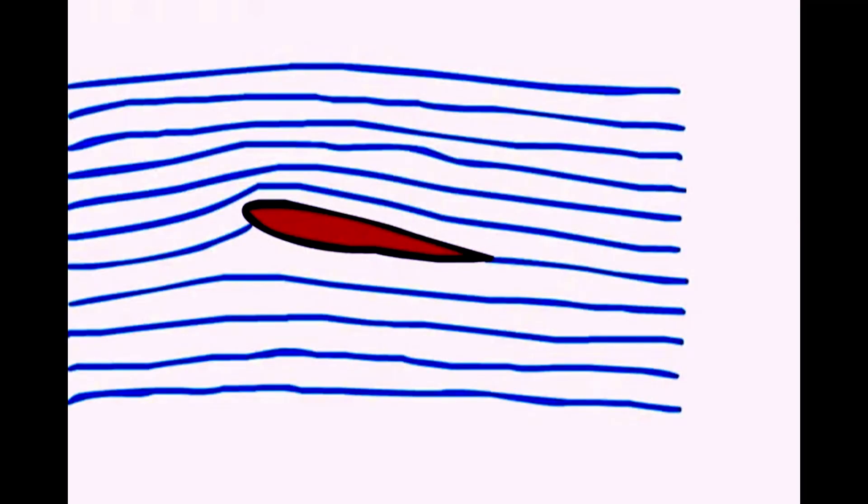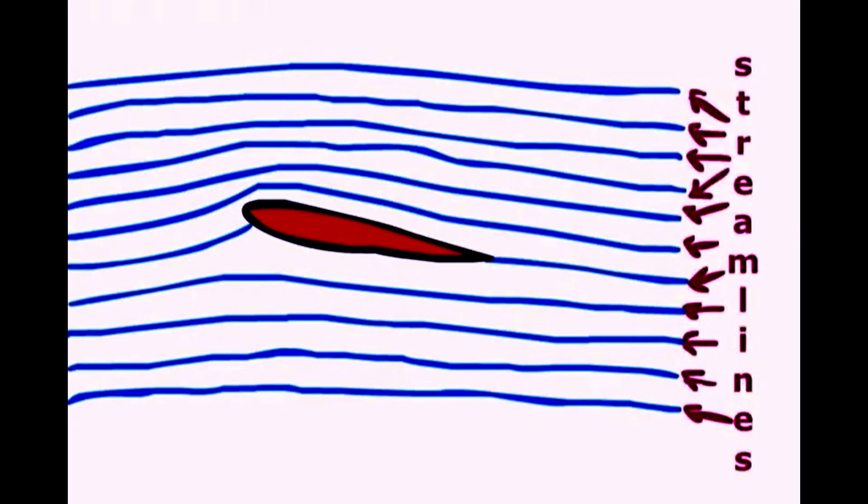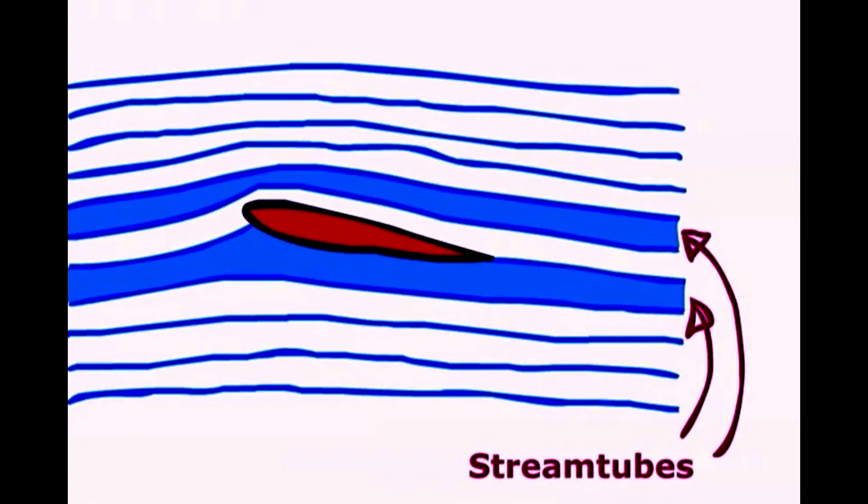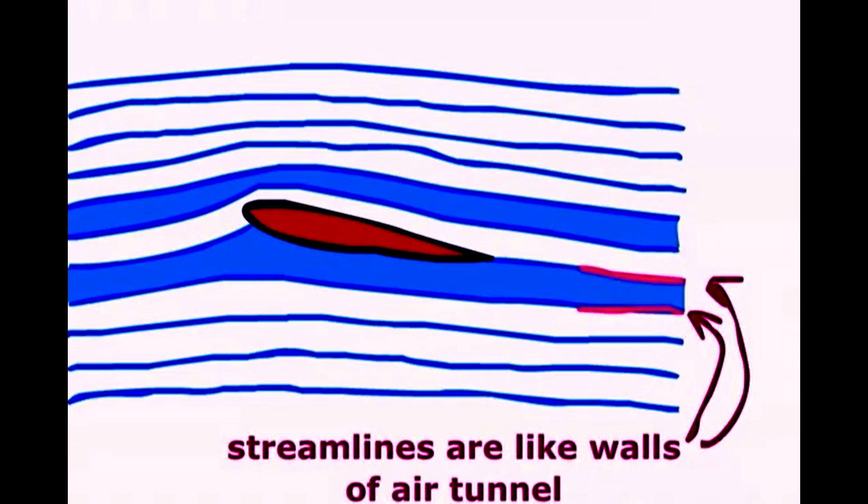These are the two stream tubes we are interested in: the upper and the lower. The upper stream tube makes a great voyage along the top of the wing, whereas the lower stream tube undertakes its magnificent expedition along the bottom.